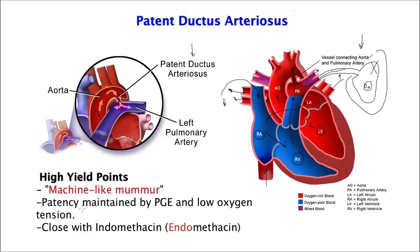The patency of a patent ductus arteriosus is often maintained by prostaglandin E and also low oxygen tension — that keeps the PDA open. However, in order to fix this pathology, you have to give the patient indomethacin, which closes the patent ductus arteriosus. Once you close that channel, blood can easily go down from the aorta to the rest of the systemic circulation. So for the board exam: prostaglandin E and low oxygen tension keeps it open, and indomethacin closes it.